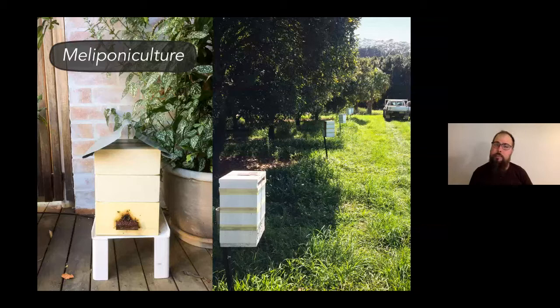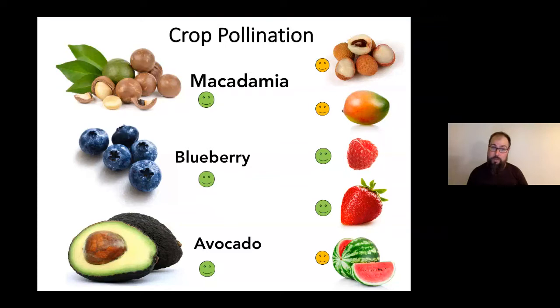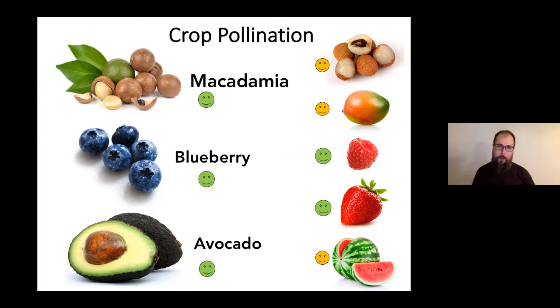Increasingly, growers of certain crops — including macadamia and blueberry — are buying these hives, maintaining them on their crops, and propagating them for managed pollination services. Macadamia is the main crop currently, with blueberry slowly growing. We know stingless bees do a good job pollinating blueberry. Avocado, raspberry, and strawberry are also being looked at — growers think they're doing a good pollination job, but we don't yet have the data to be sure.